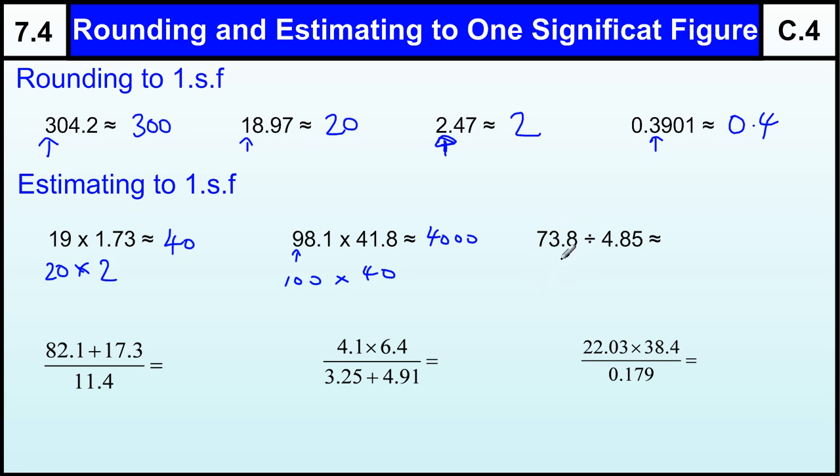73.8 to the nearest one significant figure, so that's seventy because it's the nearest ten, divided by the nearest whole number is five. And five goes into seventy fourteen times.